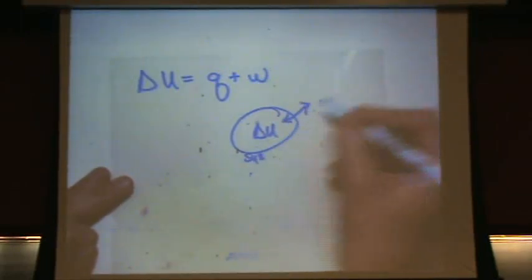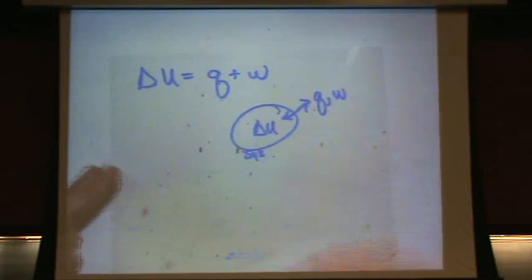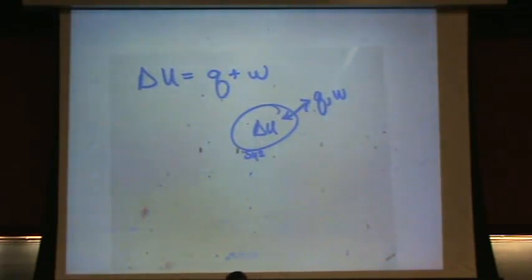And Q and W are the heat or work. So Q is heat, W is work that flow. So Q and W represents flow of energy. Delta U is just energy within.